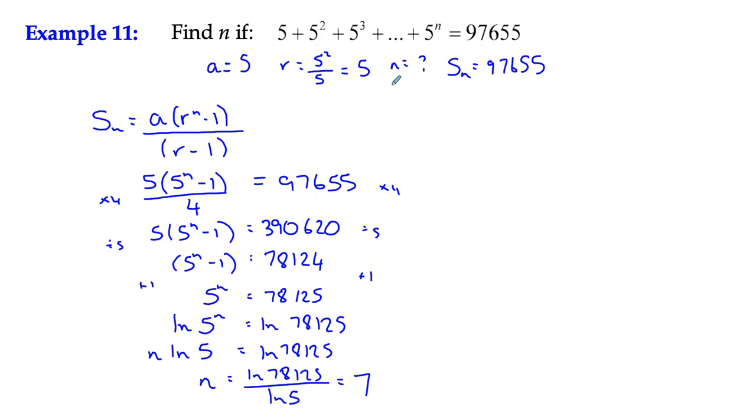In other words, there are 7 terms in the series to get a sum of 97,655.